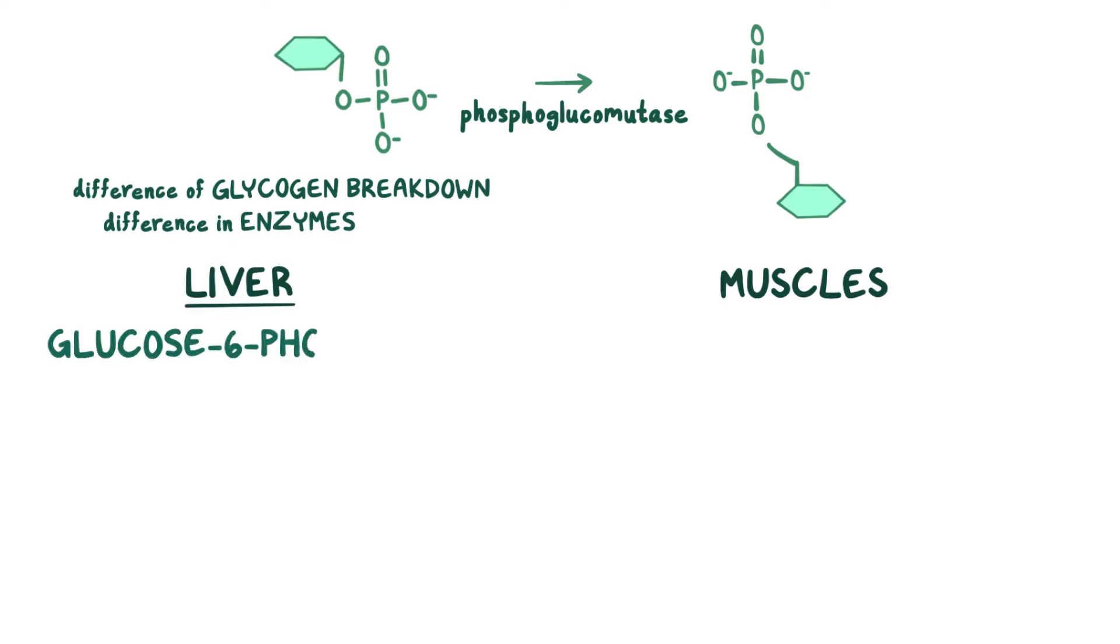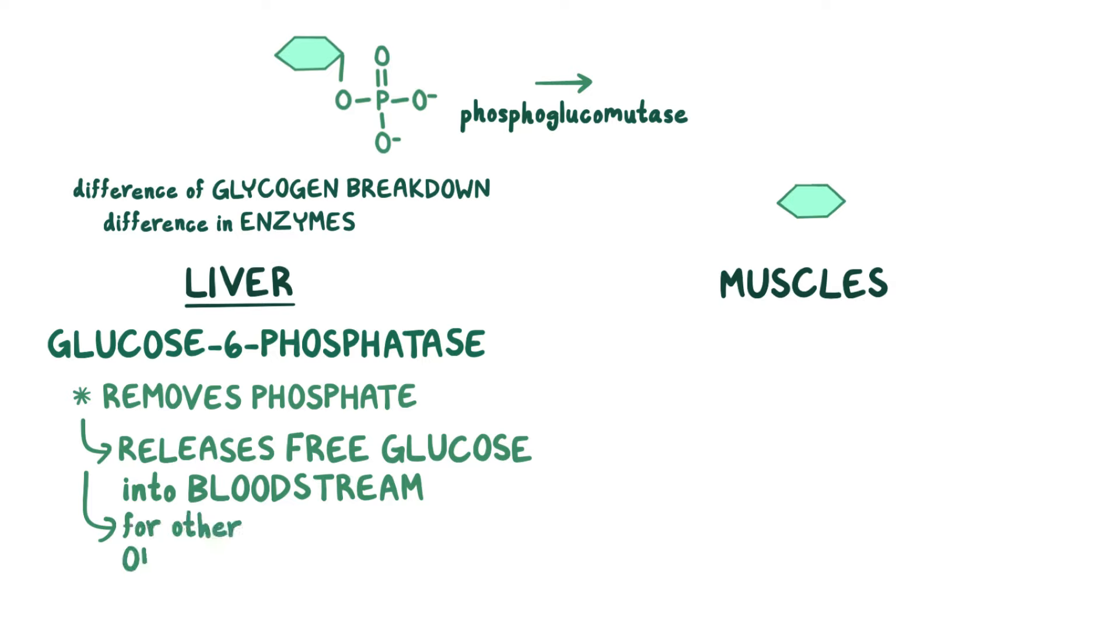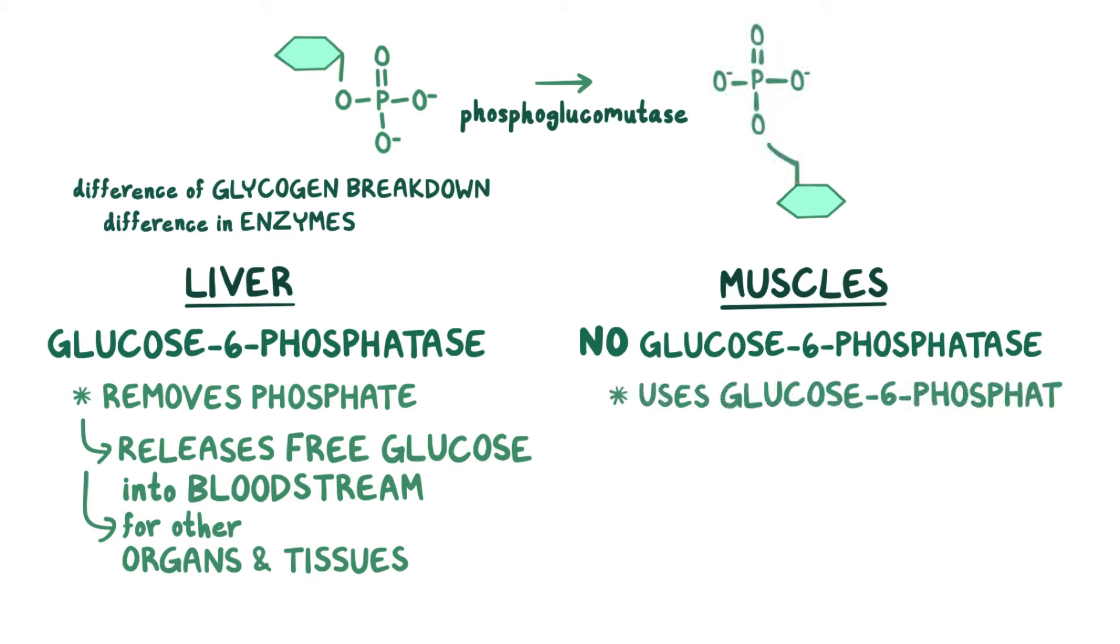In liver cells, glucose-6-phosphatase removes the phosphate off of the 6-carbon, releasing free glucose into the bloodstream for other organs and tissues to use. Skeletal muscle doesn't have this enzyme, so it simply uses the glucose-6-phosphate by sending it into the glycolysis pathway to make energy that can help you with that run.